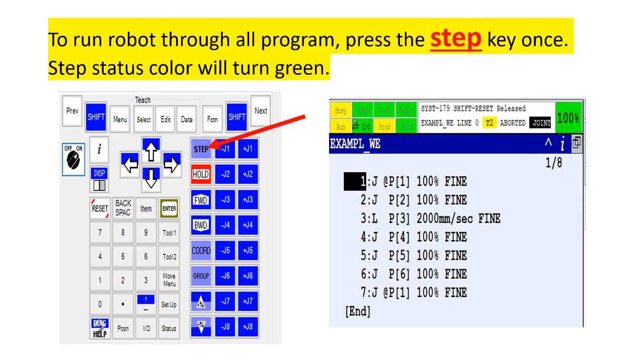To run the robot through all the program, press the step key once. Step status color will turn green.